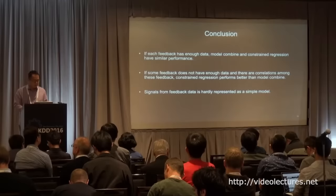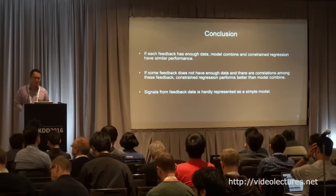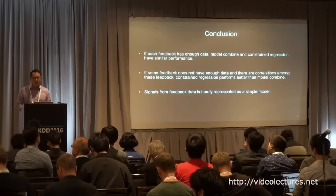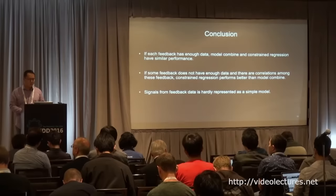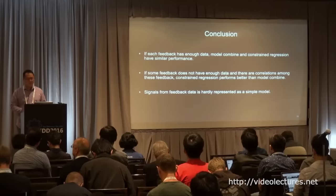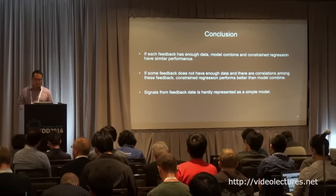In conclusion, there are two interesting results. First, if you have multiple feedback types and each has enough training data, training individually or jointly gives the same performance. But in some cases, one feedback type doesn't have enough training data — for example, hide events are very infrequent. If you have a large amount of correlated data, such as clicks, and you train them together with joint training, it can perform better than individual training.